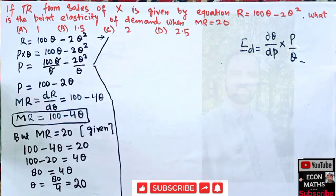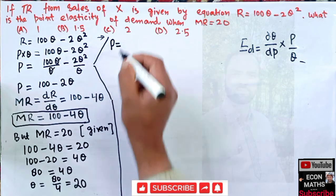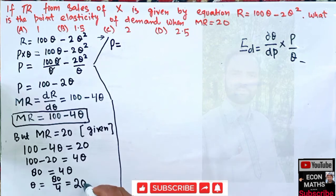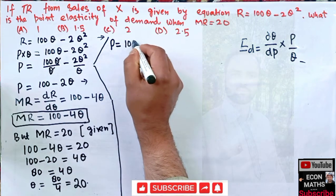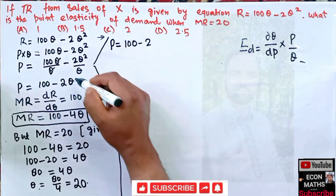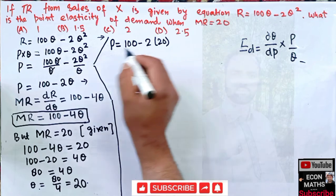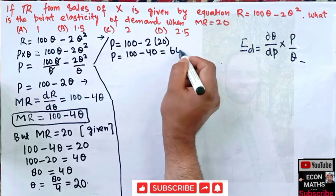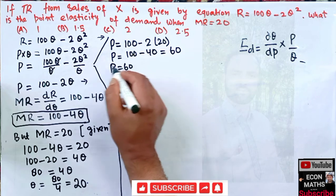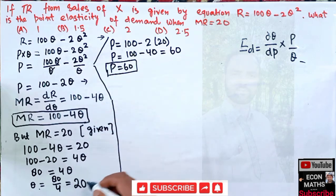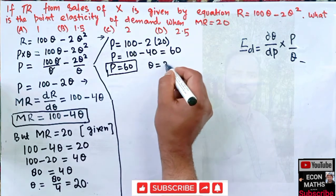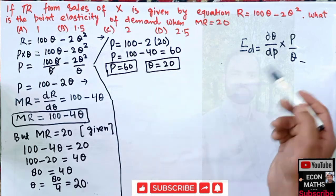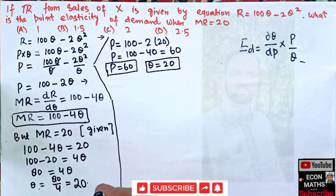Now we find P by substituting Q = 20 into the inverse demand function: P = 100 − 2(20) = 100 − 40 = 60. So we have P = 60 and Q = 20.